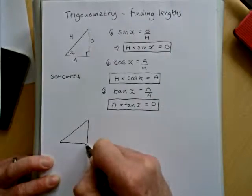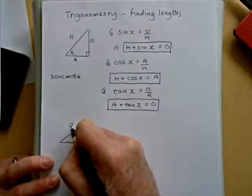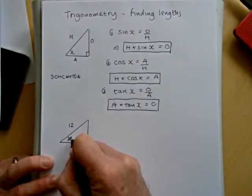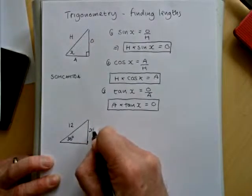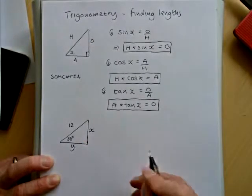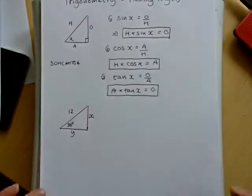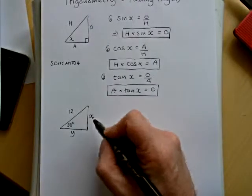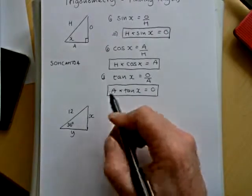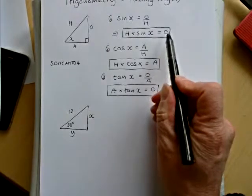So suppose I have a right angle triangle, and my hypotenuse is 12, and my angle is 36 degrees. So I want to find x and y. So we'll start with x.